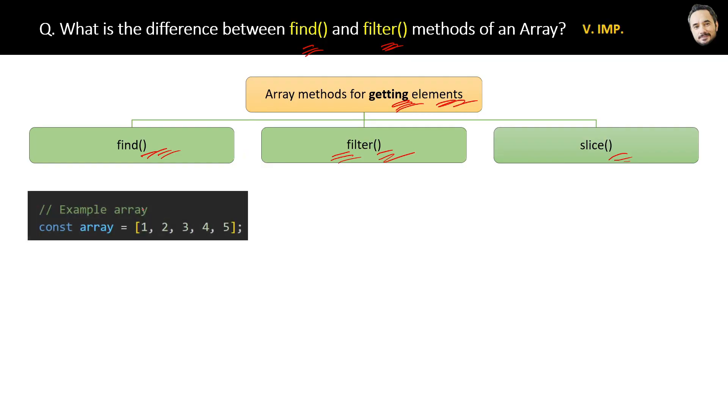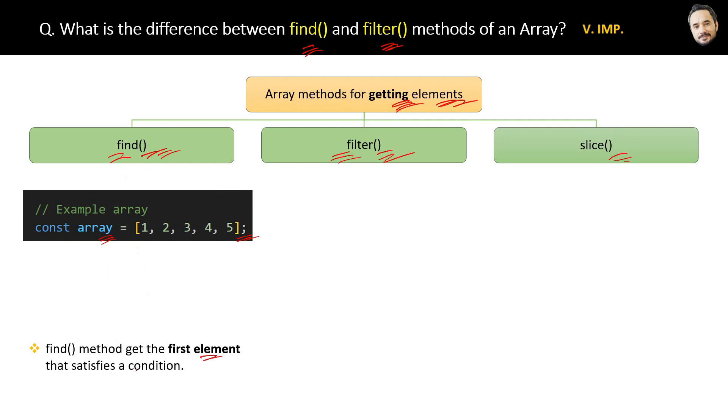Suppose we have an array as a variable that contains a list of numbers assigned to it. Now the use of the find method is: find method gets the first element that satisfies a condition. Let me show you how.